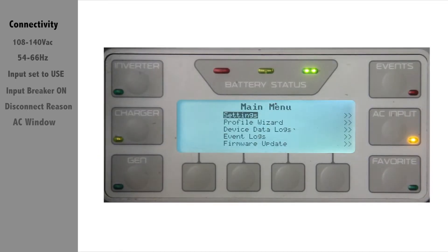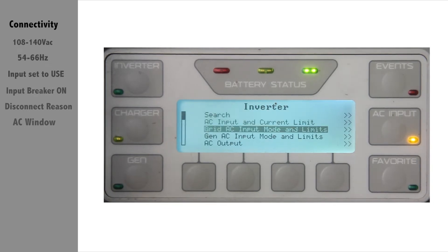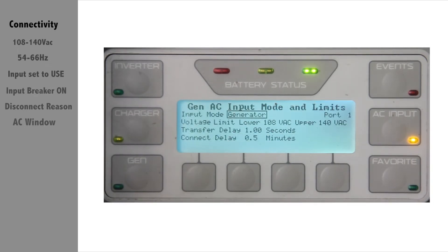From the Mate 3, go to lock, settings, inverter, gen AC input mode and limits to adjust upper and lower voltage limits.